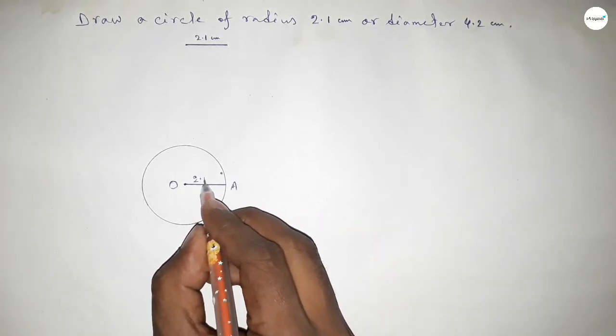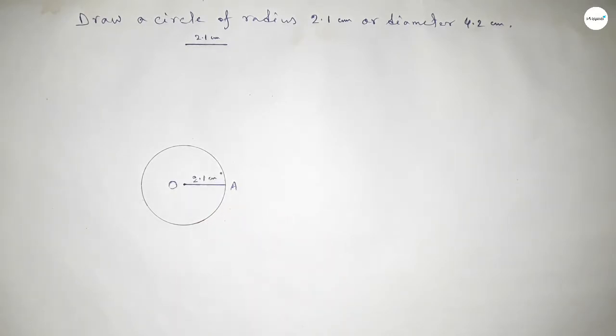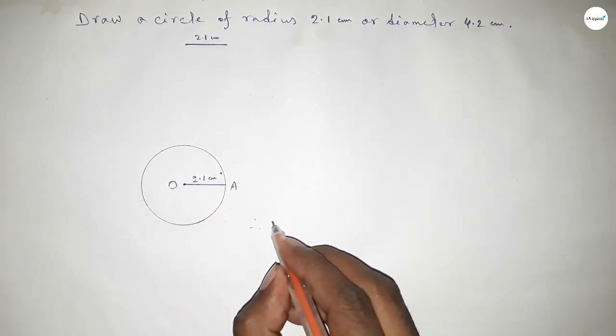So OA equals 2.1 centimeter. Therefore, radius OA equals 2.1 centimeter.